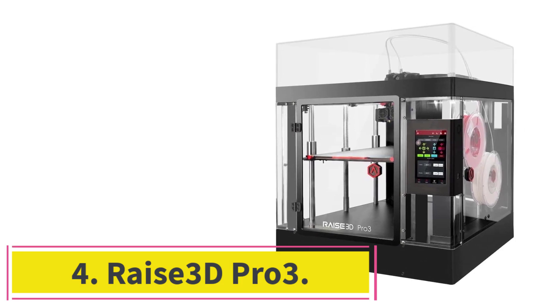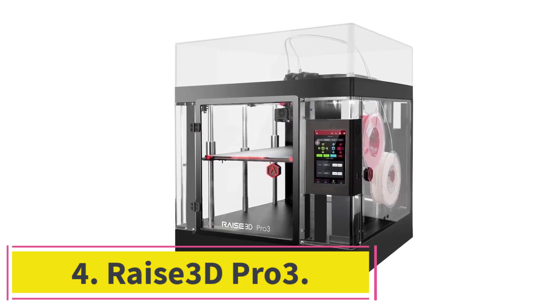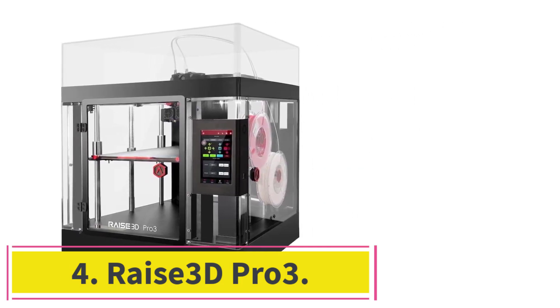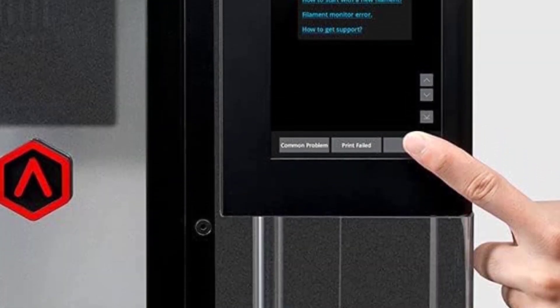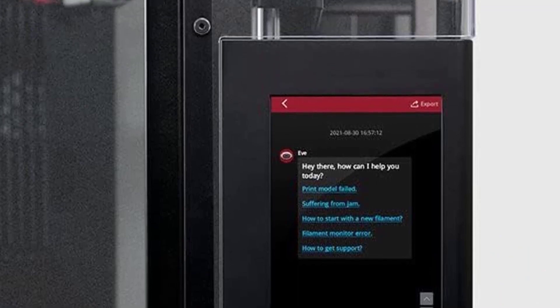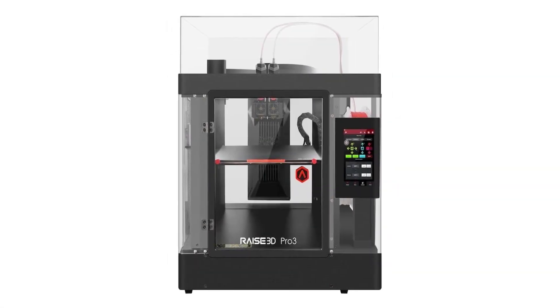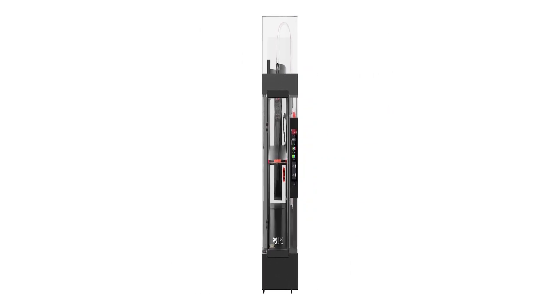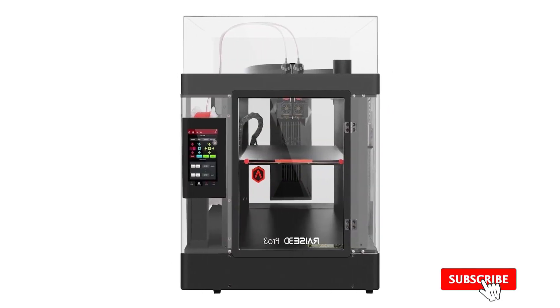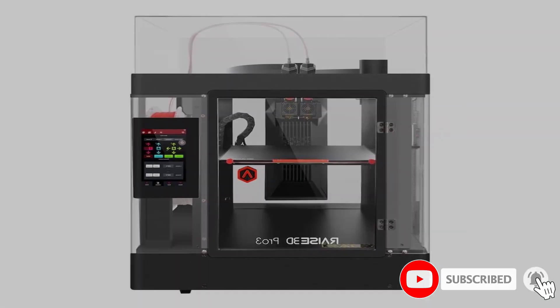At number 4, Raze 3D Pro 3. The Raze 3D Pro 3 is our upgrade pick for the best multicolored 3D printer. This machine has a lot of features that make it a great choice for more advanced users. The Pro 3 has a large build volume of 11.8 x 11.8 x 11.8 inches and comes with a dual head extruder and an electronic lifting system.